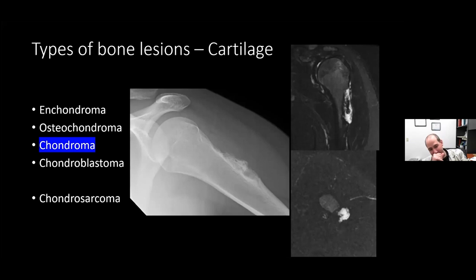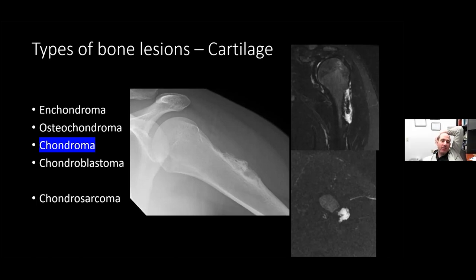Typical location for chondroma - assuming periosteal or juxtacortical chondroma. I've seen them in the humerus, in the proximal tibia and tibial tubercle, but I'd have to look up the exact distribution to give you a precise answer.